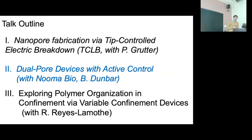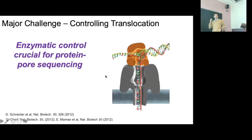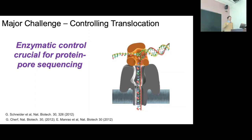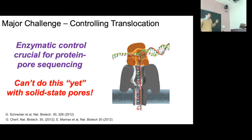Moving on to applications of pores — this is in collaboration with Nuba Bio, led by CEO Bill Dunbar. Controlling translocation is a major problem. Even though protein pores have nanometric dimensions, you cannot use them for sequencing unless you add a molecular machine — a polymerase — to control the translocation. With polymerase-controlled translocations you can get about 10 milliseconds per step, a four-order-of-magnitude slowdown. But with solid-state pores I can't yet couple a polymerase — the translocation is uncontrolled.